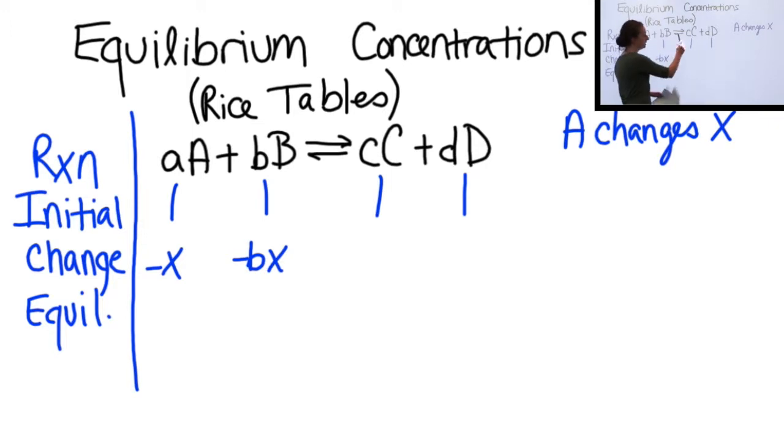And then subsequently C and D are going to increase by a factor of X depending on their coefficients. So C is going to increase by plus cX and D by plus little dX.